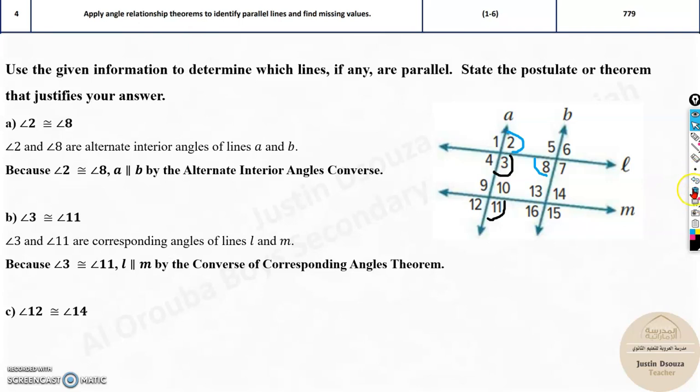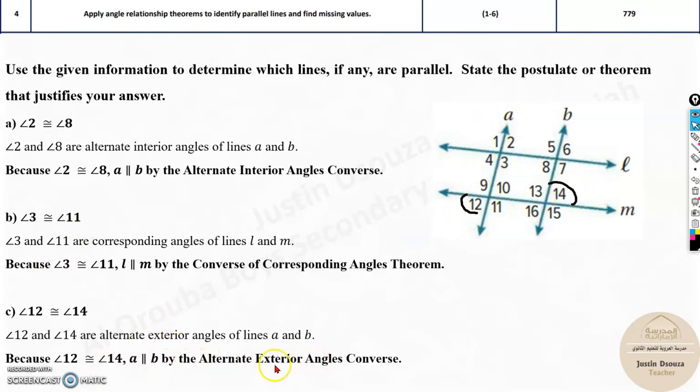12 and 14. Let's see. Where is 12 and 14? Over here is 12. Over here is 14. It is exterior outside angles to A, B is parallel. Once again, 3 and 11, if you notice, makes L and M parallel. And over here, 12 and 14 will make A and B parallel by alternate exterior angle converse.